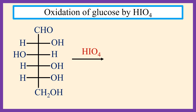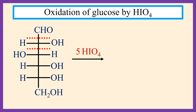So, here 5 equivalents of HIO4 are consumed for 5 pairs of adjacent groups: 1 equivalent, 2 equivalent, 3 equivalent, 4 equivalent, and 5 equivalent.